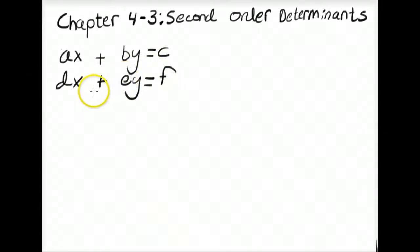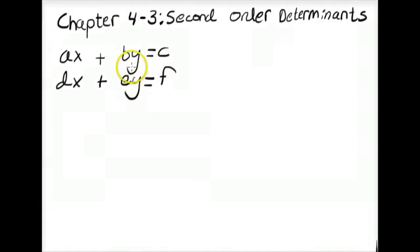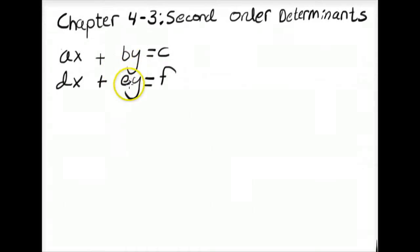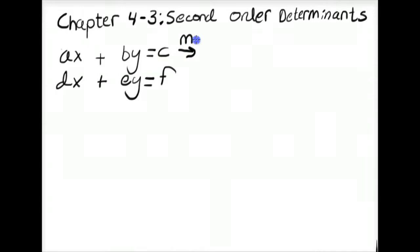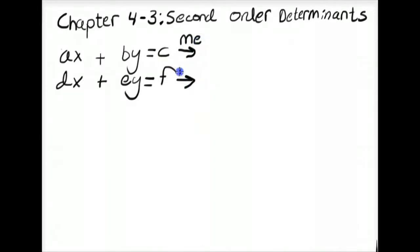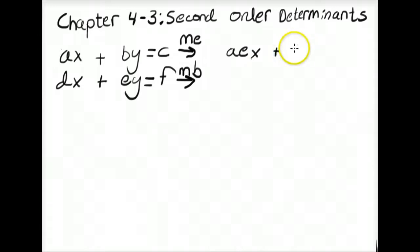Let's say that we want to eliminate Y. In order to eliminate Y, we're going to multiply the first equation by E and the second equation by B, because that way the Y coefficients will be the same number and can be eliminated. So we're going to multiply the first equation by E and the second by B.